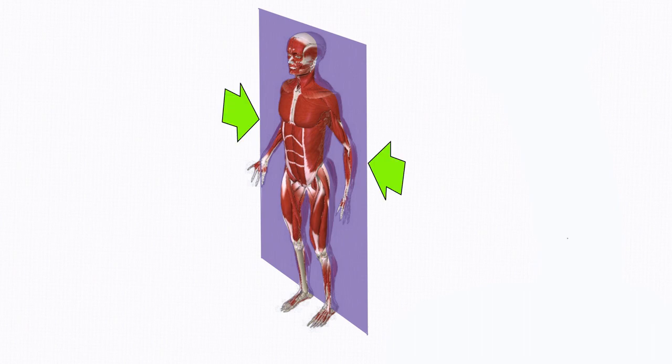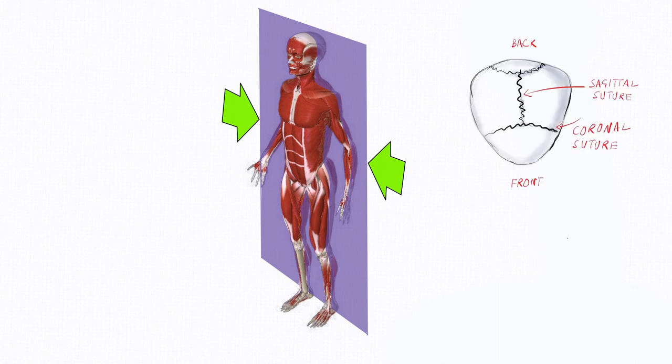Next is the frontal plane. This splits the body into anterior and posterior halves by cutting it in half vertically. This is always parallel to the coronal suture.